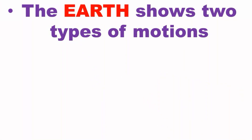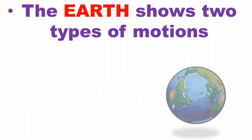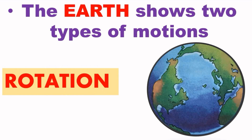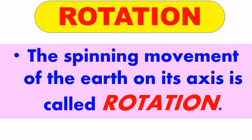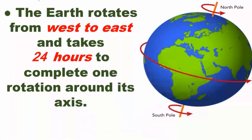You already know that our earth shows two types of motions and they are rotation and revolution. Let's start with the rotation. The spinning movement of the earth on its axis is called rotation. The earth rotates from west to east and takes 24 hours to complete one rotation around its axis.